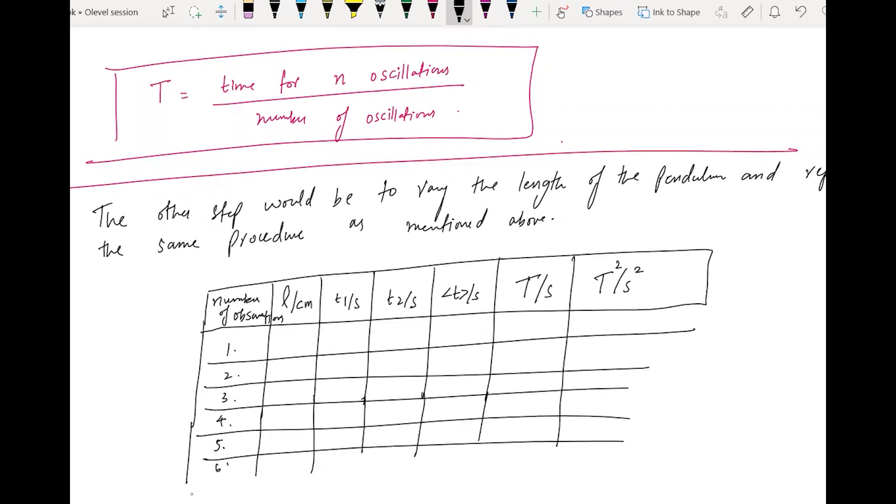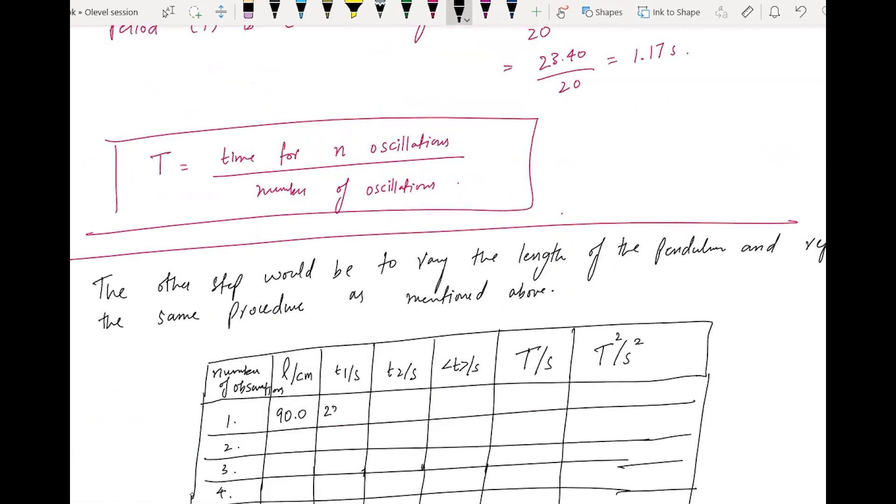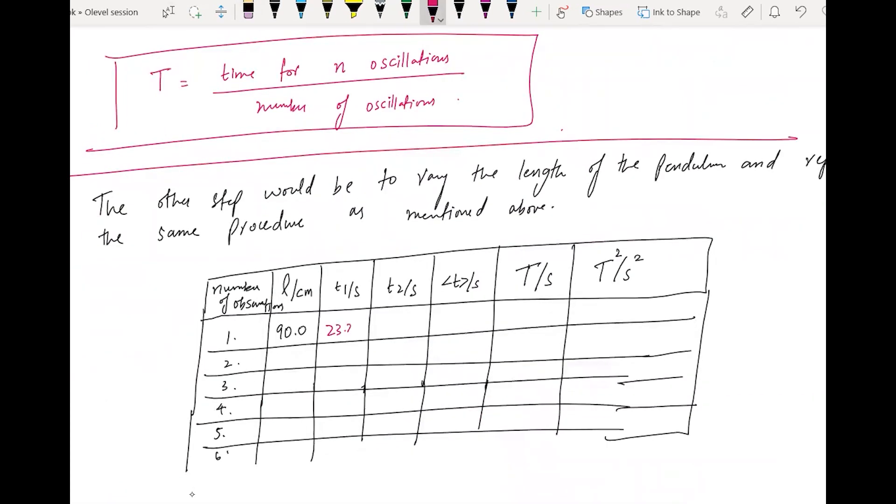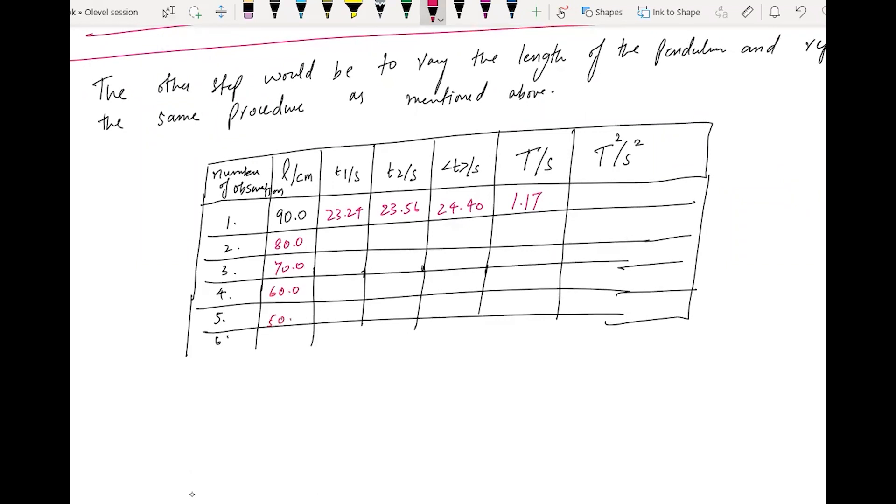You have to know that this is the procedure. First you take twenty oscillations. For example, if you got 1.17 seconds, you take the square - 1.17 squared. This is how you vary the length. As you vary the length, the reading changes. This shows how period depends on length. You keep varying the length and you'll see a change in reading.